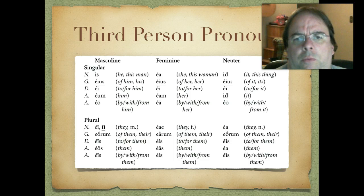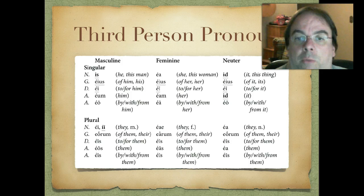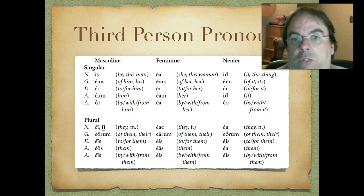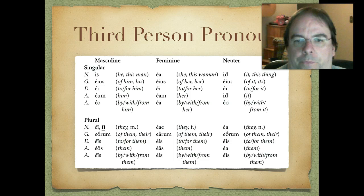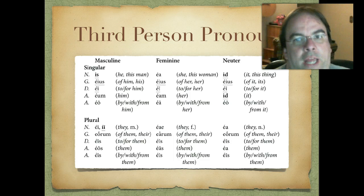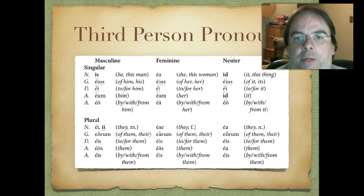It's very common as we memorize these things to do them horizontally instead of up and down. A good way to commit them to memory would be to say: is, ea, id — eius, eius, eius — ei, ei, ei — eum, eam, id — eo, ea, eo. That way you can see the repetition. So those are just the singular forms: masculine, feminine, and neuter.